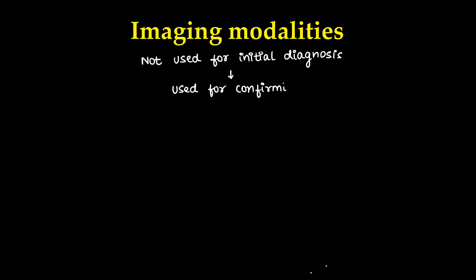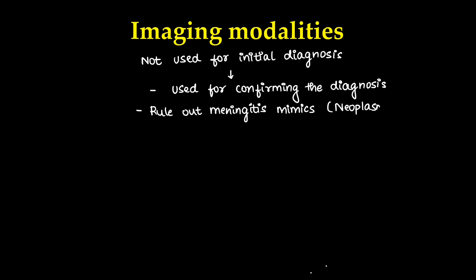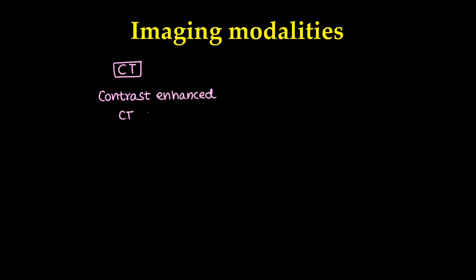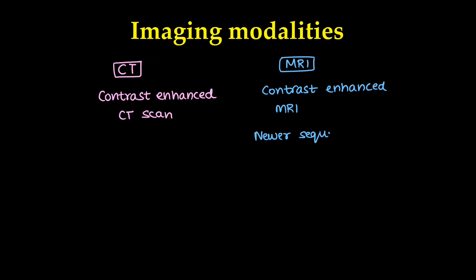Imaging is not usually used for initial diagnosis — diagnosis is made clinically — but it is used for confirming suspected cases of meningitis and to rule out meningitis mimics like neoplasm. We can also evaluate complications of meningitis and look for increased intracranial pressure before performing a lumbar puncture. The modalities used are CT, especially contrast-enhanced CT, and MRI, with contrast-enhanced MRI preferred.